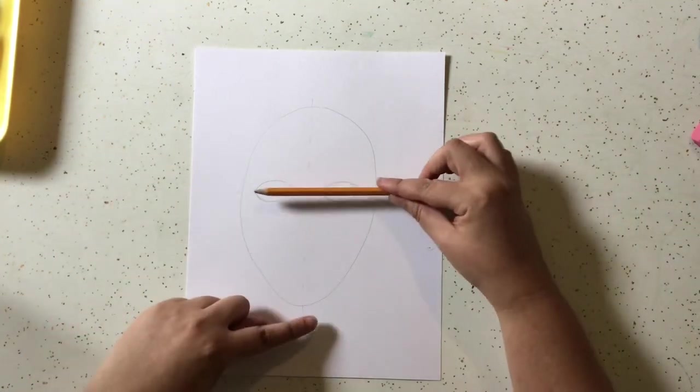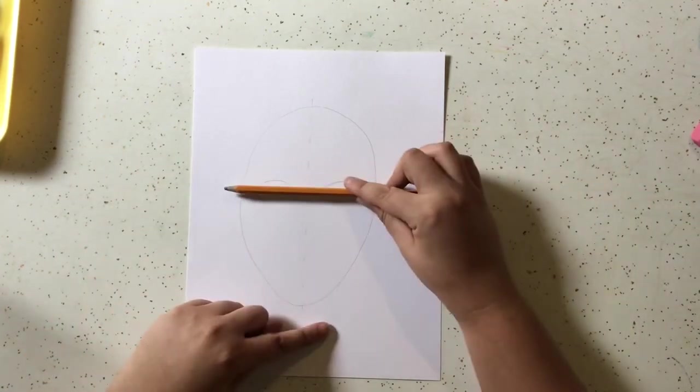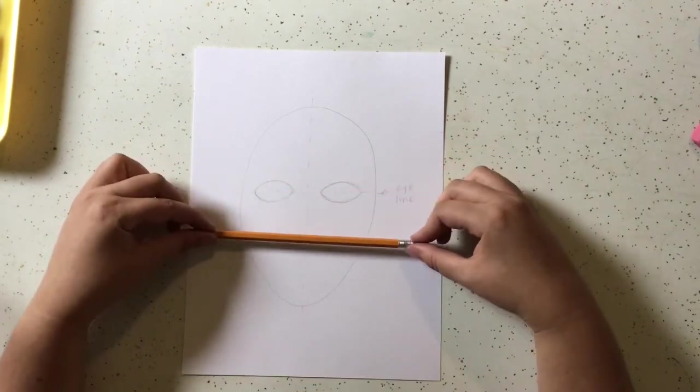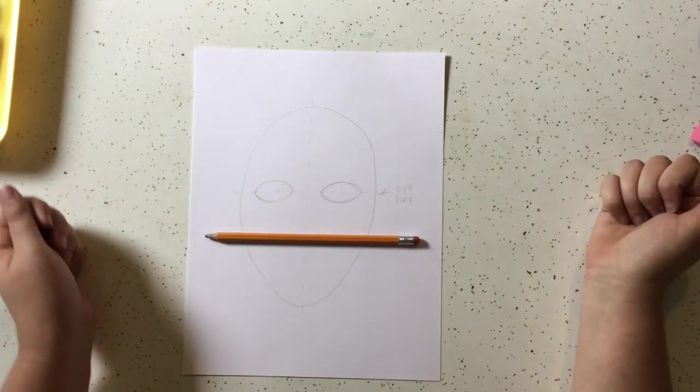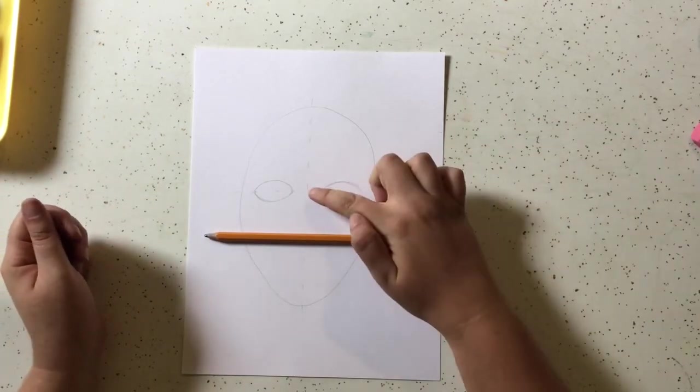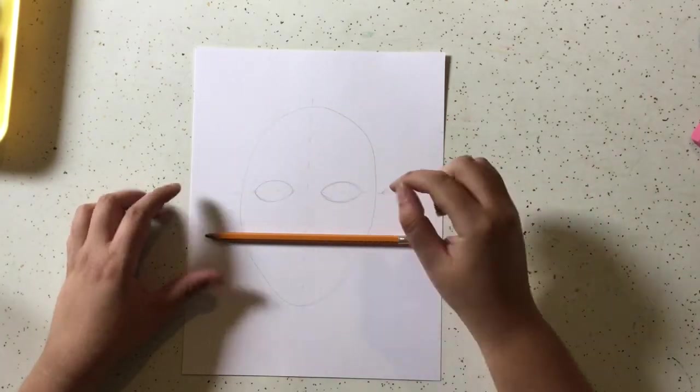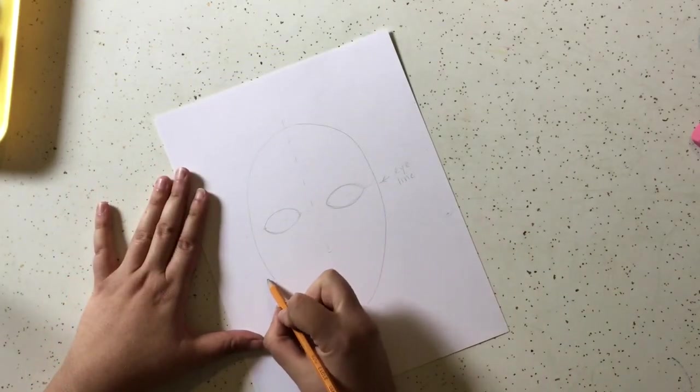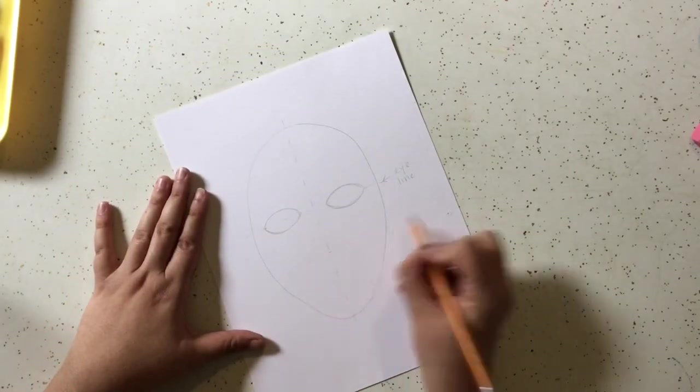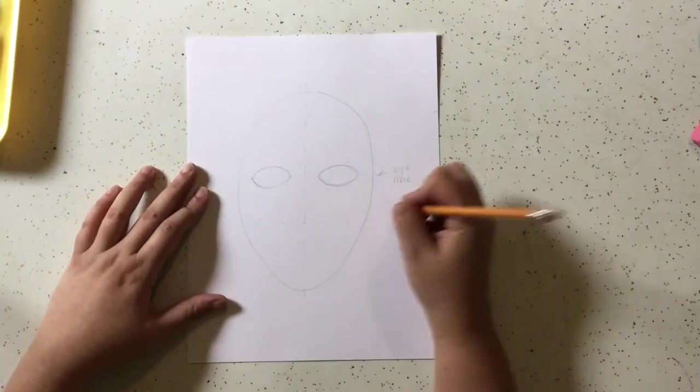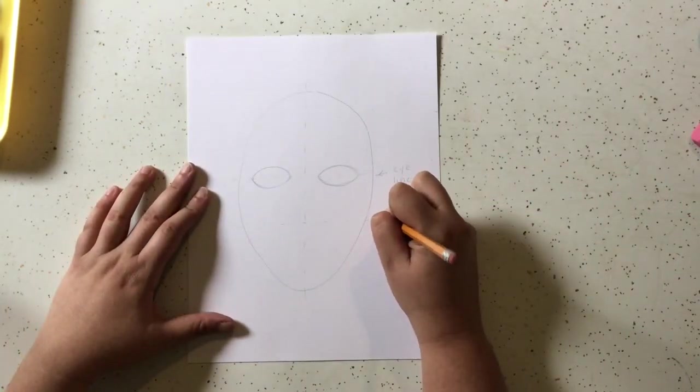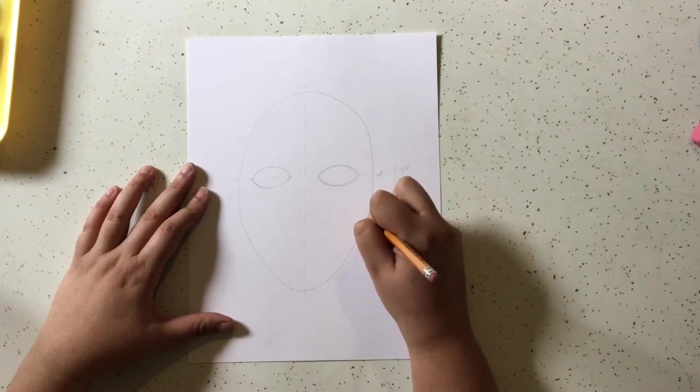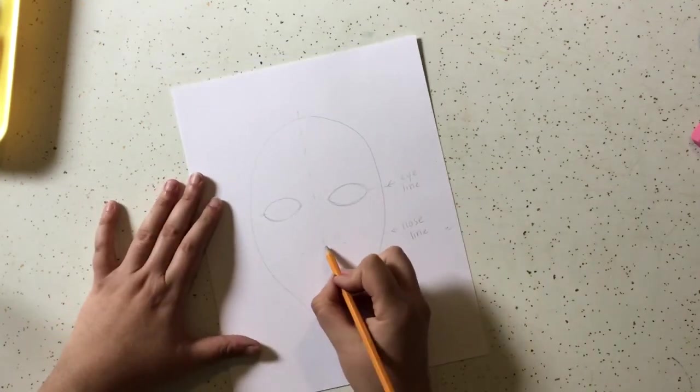The next step, we're going to take this half, bottom half, so from our eye line to the bottom. And we're going to divide that in half again. Take your pencil, lay it on, kind of find about halfway from this line to the bottom. You can make a little mark there if you want. And then sketch in a line all the way across. That is going to be our nose line. And this is actually going to be the bottom of our nose.